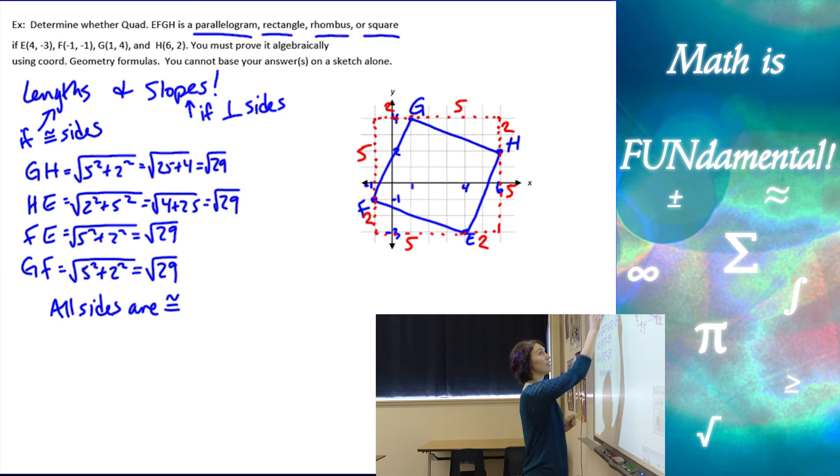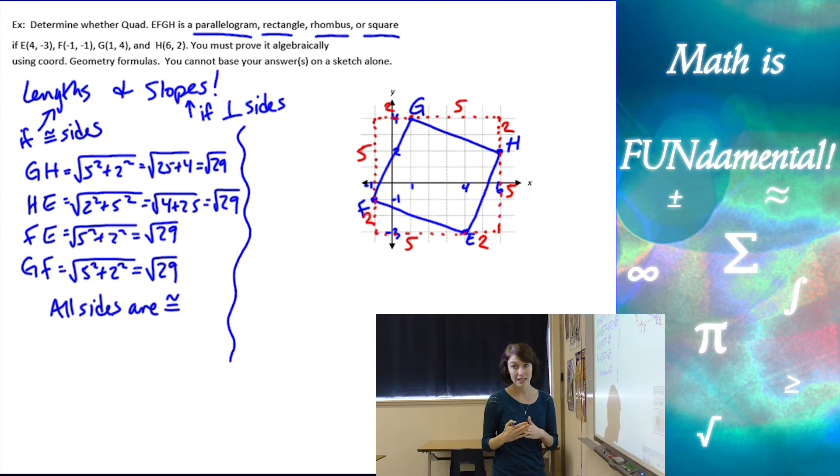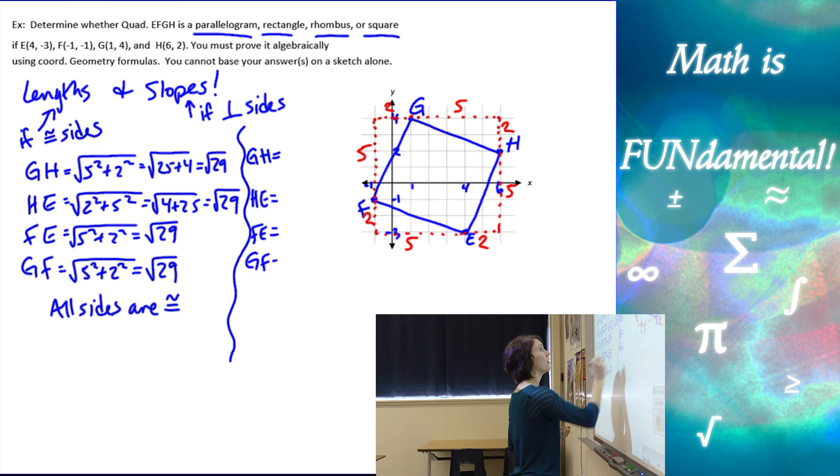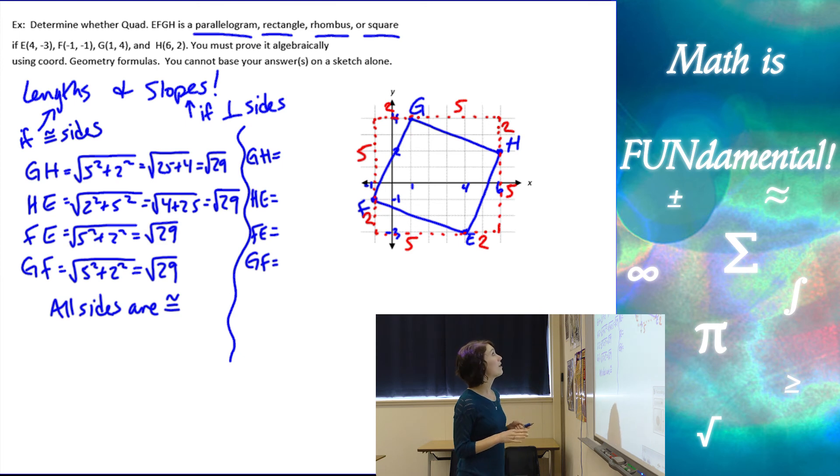So at this point, I know it's either a rhombus or a square. Now I need to find the slopes and figure out if I have perpendicular sides and if it is a square. So let's find the slopes of GH. Let's just go all the way around. GH and HE and FE and GF. All right. So my slopes, we've got, now I'm going to use my graph for my slopes. Mind you, if the problem said that we had to use our formulas, we would want to make sure to use our slope formula. But since I have a graph, I can just use that.